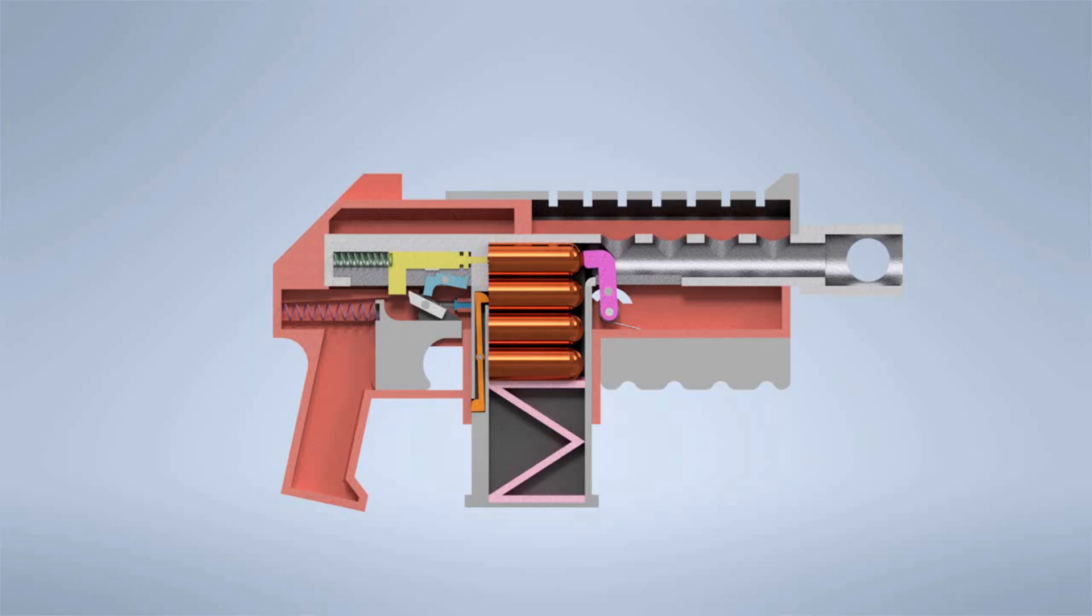The trigger works by pushing the firing pin back using the sear. As the trigger is pulled farther, rails built into the body of the gun push the sear downward. Once the sear is fully disengaged, it releases the firing pin, allowing it to strike and fire the round.